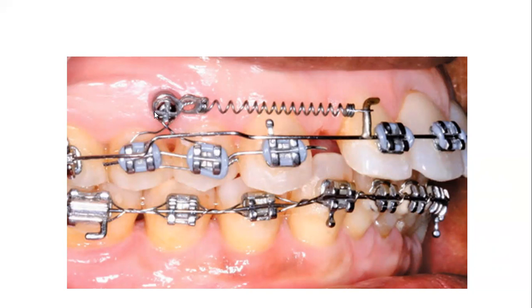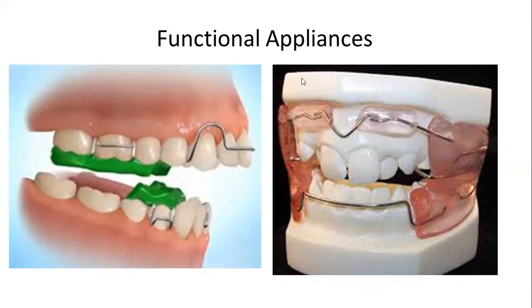Here you can see something extra in the gingiva. This is actually a TAD — a temporary anchorage device, or mini screw implant — used to enhance anchorage. And here you can see there is a coil spring for space closure. These are two pictures of functional appliances: this is the twin block appliance and this is the Frankel appliance. These will be discussed in later classes.